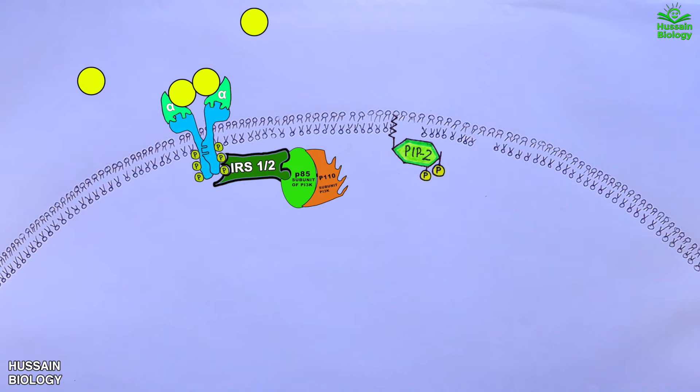The P85 subunit in turn recruits the P110 subunit of PI3 kinase, which is the catalytic unit. So we now have fully activated PI3 kinase, and this activated PI3 kinase acts on PIP2 and converts it into PIP3 as shown in the animation. Furthermore, this PIP3 activates the membrane-bound PDK1 molecule and other kinases.